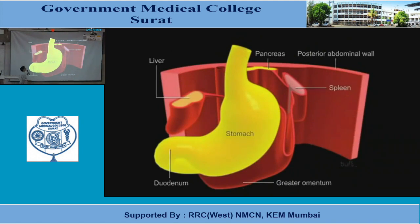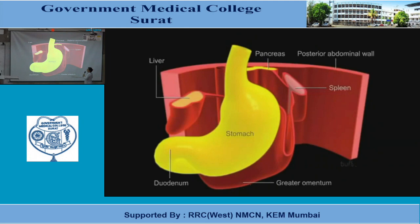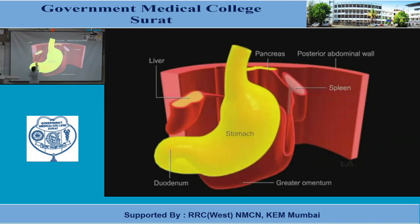Here you can see the stomach and the spleen. The spleen is developing where? In the dorsal mesogastrium — behind the stomach. This is the stomach, stomach pyloric region continuous with the duodenum. This part is known as the greater omentum. From stomach to the liver is a part of the ventral mesogastrium. The ventral mesogastrium is anterior to the stomach. It forms the lesser omentum from the lesser curvature — that is known as the lesser omentum.